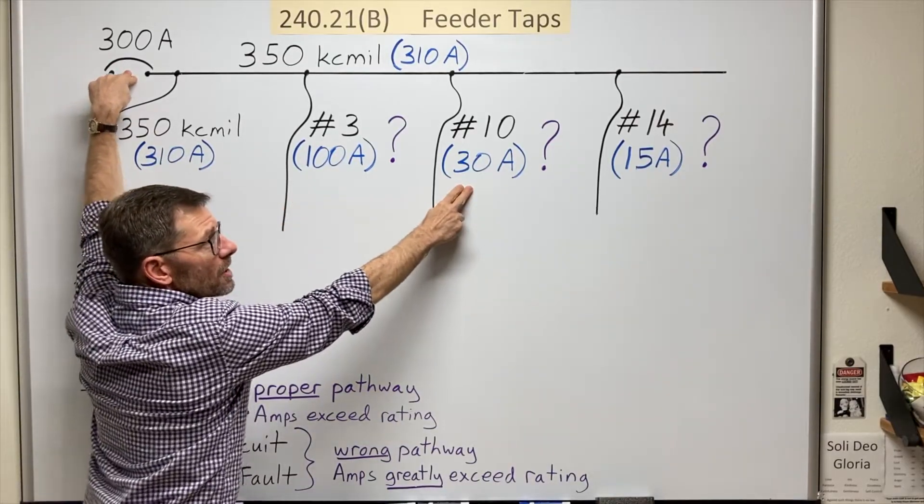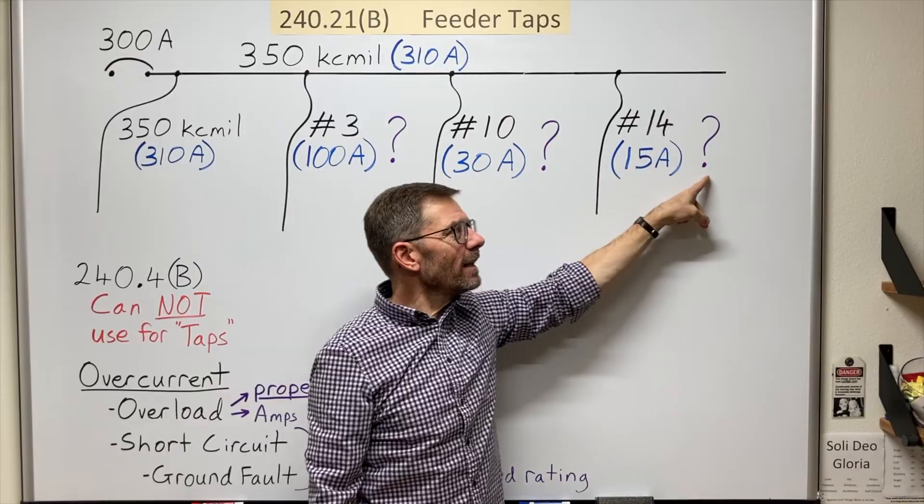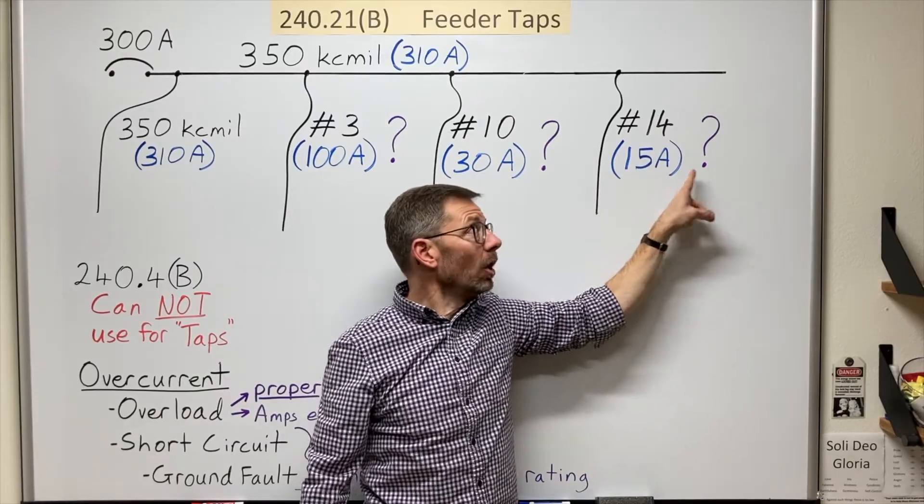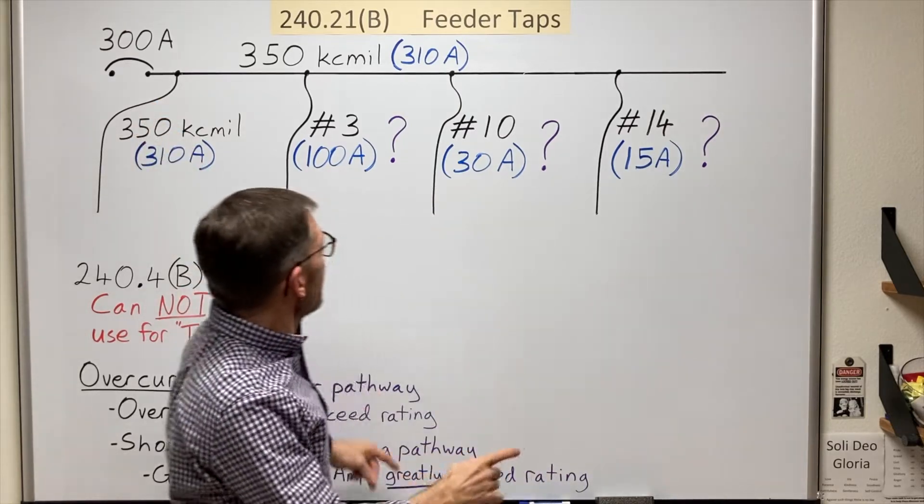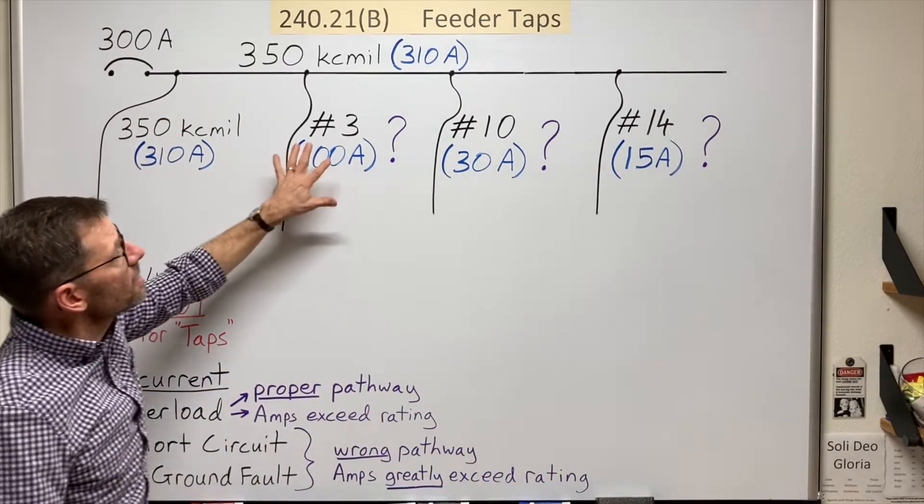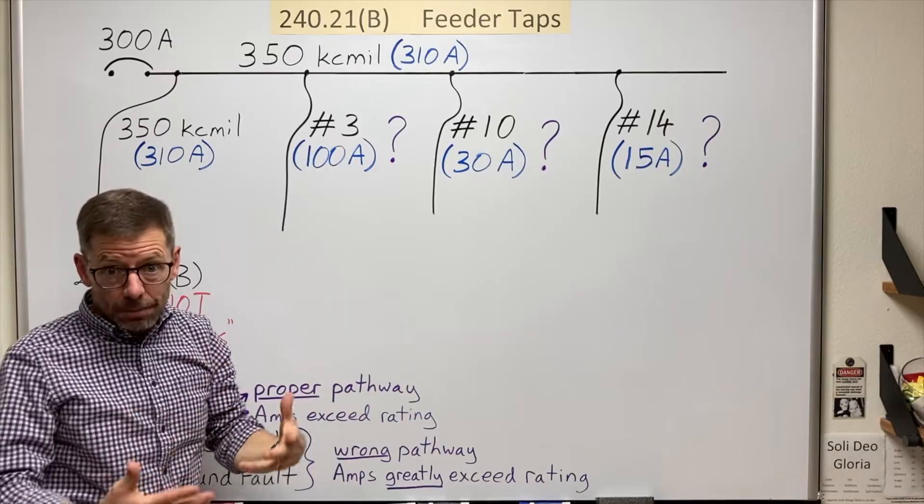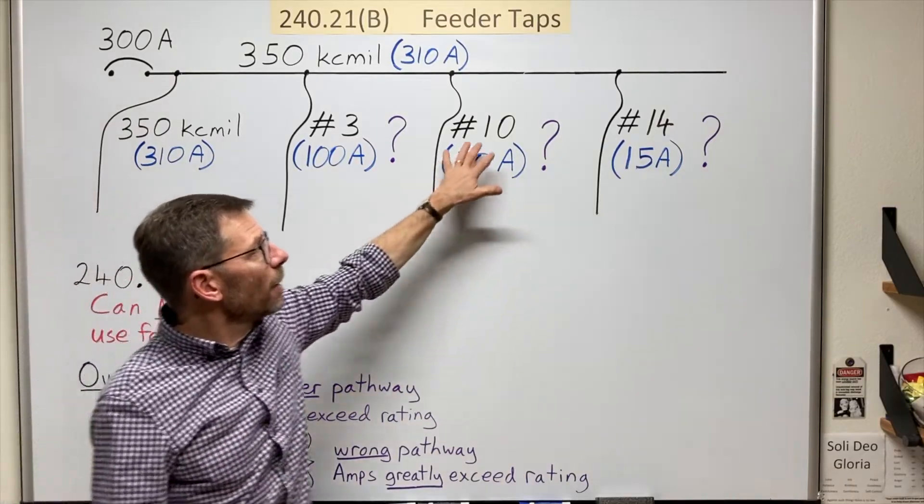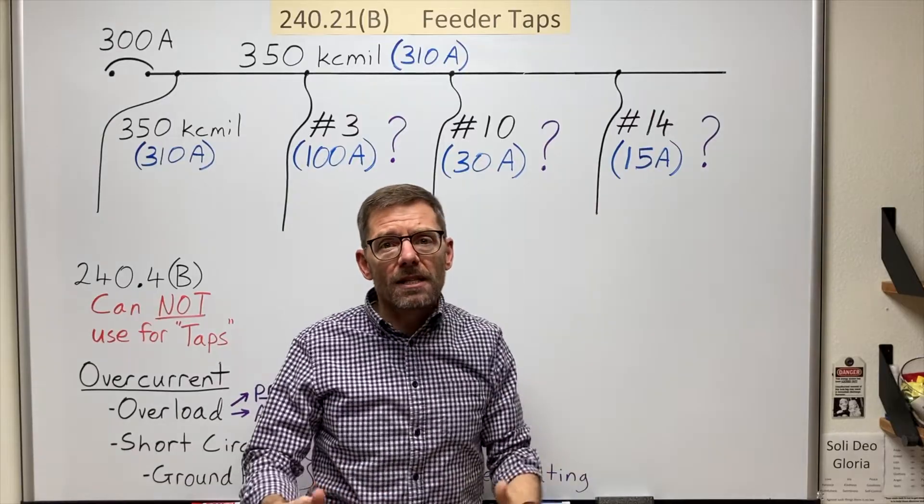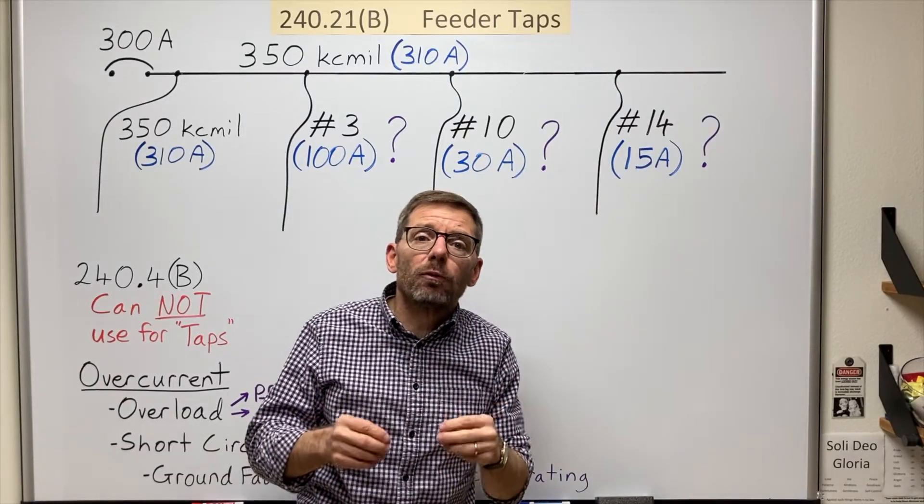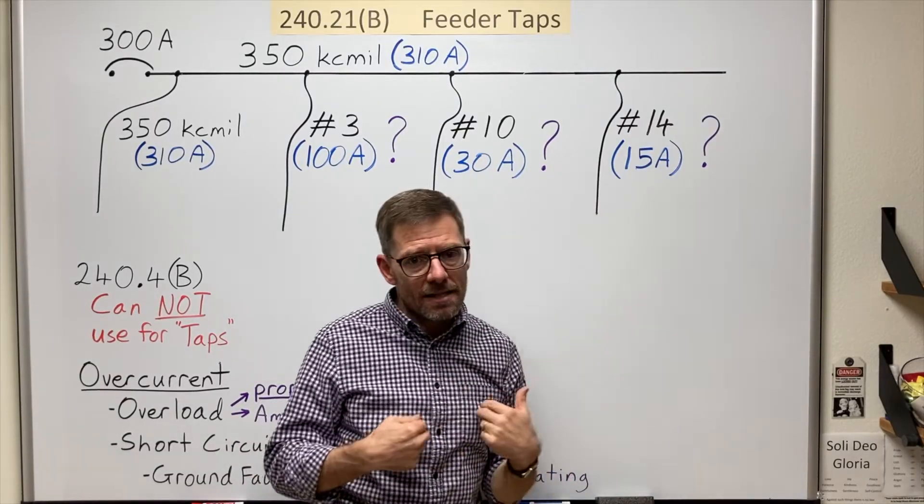The reason is the roundup rule allows you to take a lower ampacity conductor if you want and protect it with the next bigger size overcurrent device. But here we're skipping all kinds of sizes. This is too much of a difference. A bigger difference. And when does it become too small of a wire for this? The other thing I should add is I'm using ampacities from the 75 degree copper column.